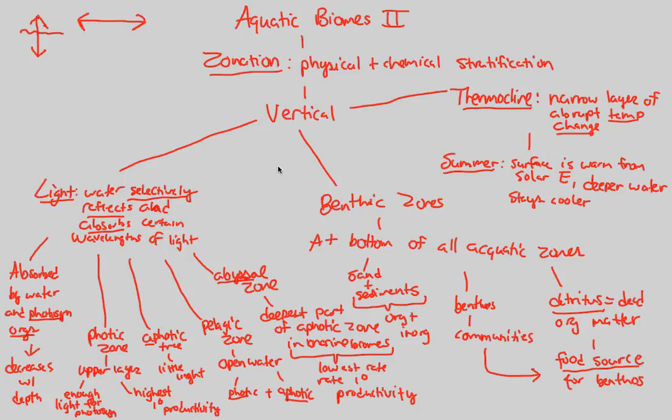That concludes our understanding of the vertical zones in aquatic biomes. We looked at the horizontal prior. Now we understand the vertical. Big idea here. Light, I believe, is a huge, huge important factor in understanding and establishing primary productivity. And then we also have those without light. How do they survive? Well, we use the detritus and the idea of benthos establishing themselves. And then finally, we looked at thermocline, that abrupt change based off of temperature.